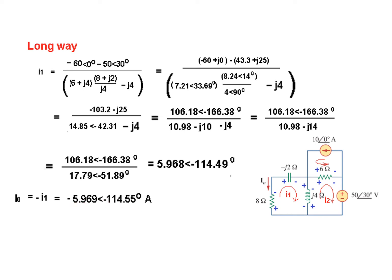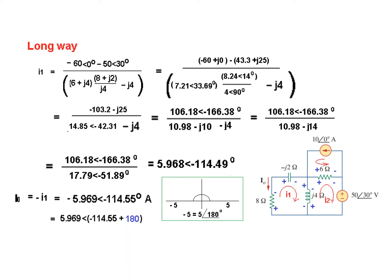We have a minus sign, and we need to convert this into the angle. Recall the relation: the difference between 5 and minus 5 is 180 degrees. So from minus 5, going 180° plus or minus brings us to 5. Using this relation, we eliminate the minus sign and add 180° to the angle. Adding 180°, our final answer is 5.969 at angle 65.45° — this is the answer given in the book.